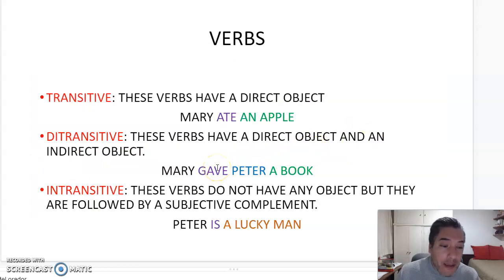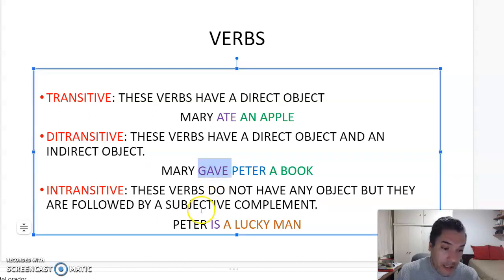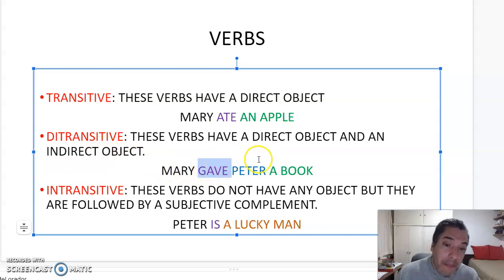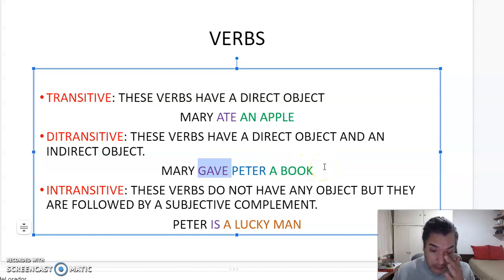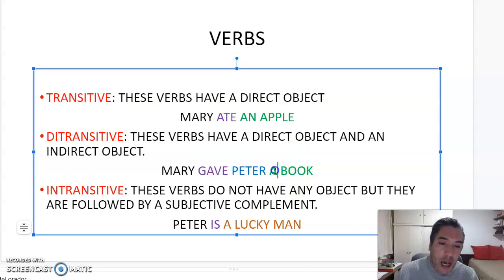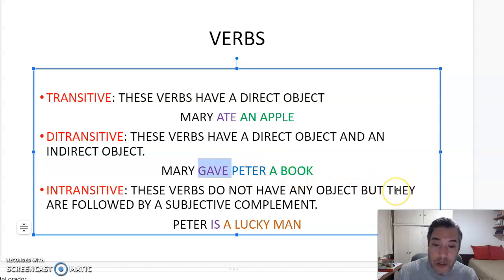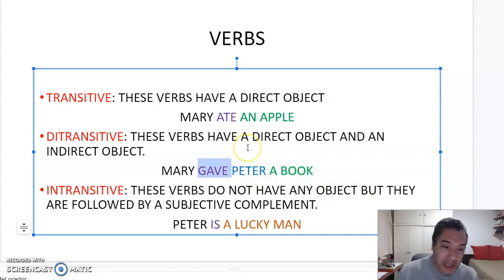In 'Mary gave Peter a book,' Peter is the person who receives the object — that is the indirect object. The book is the actual object given — that is the direct object. The verb 'give' has another structure too: you can also say 'Mary gave a book to Peter,' where 'to Peter' is also the indirect object.